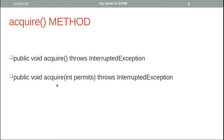We have two flavors of the acquire method: one which does not accept any argument, and one which accepts an integer as its argument. Both acquire methods throw InterruptedException, which we have already seen. The acquire method and the sleep method both throw InterruptedException, which is a checked exception.